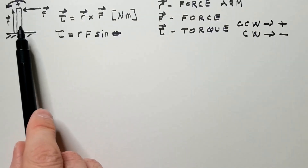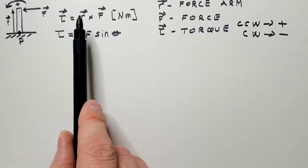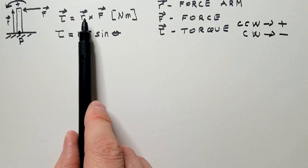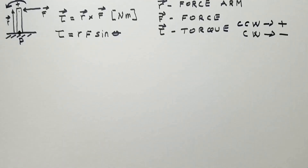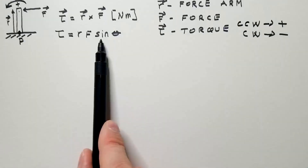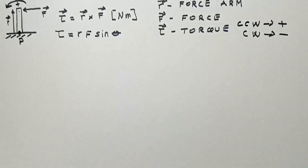Also, the closer the angle between the force arm and the force is to 90 degrees, the greater the torque, because sine of 90 degrees is 1. If we have multiple torques, the net torque will cause angular acceleration.